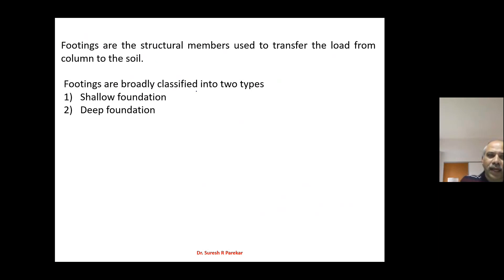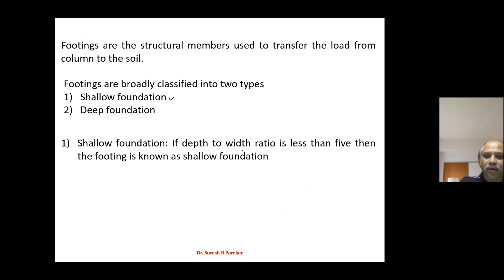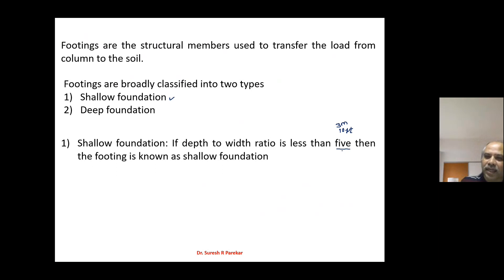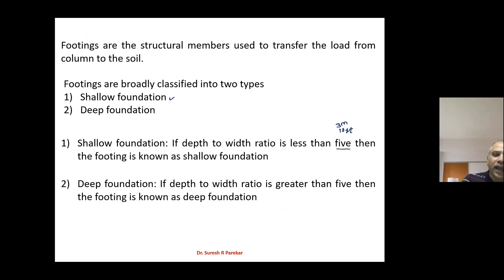Footings are broadly classified into two types: shallow foundation and deep foundation. We are interested with shallow foundation. Shallow foundation is where the depth to width ratio is less than five — then the footing is known as a shallow foundation. In some books it is given as less than three meters, some say less than 10 feet, some say six, some say four. We will take it as five. If greater than five, it is a deep foundation.